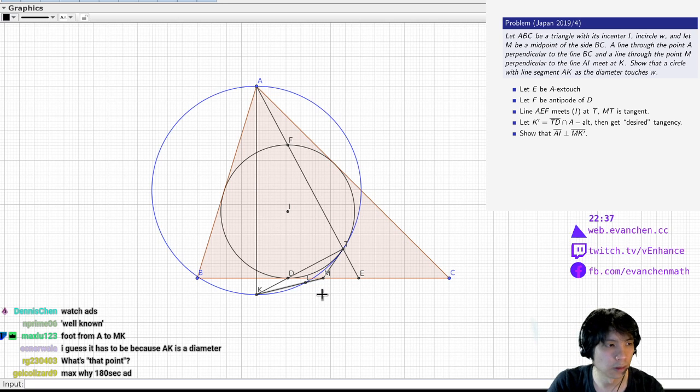So we've redefined it and basically I want to show... what does this have to do with I? I guess it's because AK is a diameter.